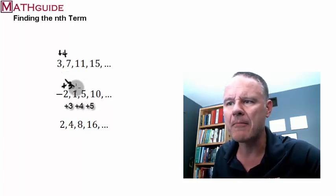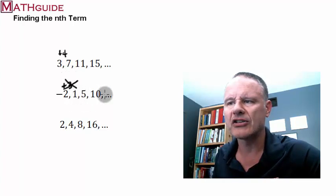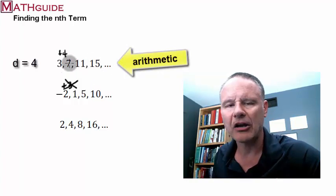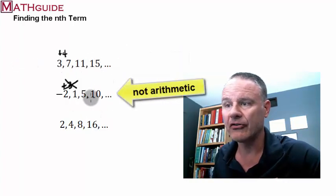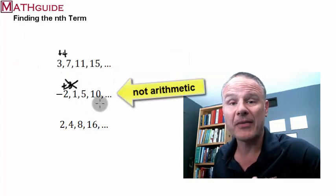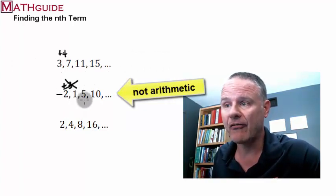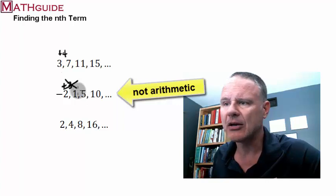So the first one is arithmetic because there's a common sum that glues all the numbers together. Here, there's no common sum. The sum keeps changing. It's a pretty regular pattern, add three, add four, add five, but that's not an arithmetic sequence.